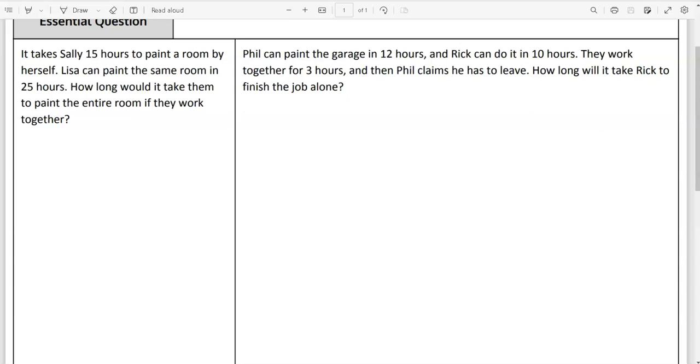So we have Sally, we have Lisa, and we have together. Sally is doing her one job in 15 hours. Lisa is doing the same job in 25 hours. That's her rate. So in one hour, she gets one-twenty-fifth of the job done. In one hour, Sally gets one-fifteenth of the job done. That's how that's being represented. It's their rate.